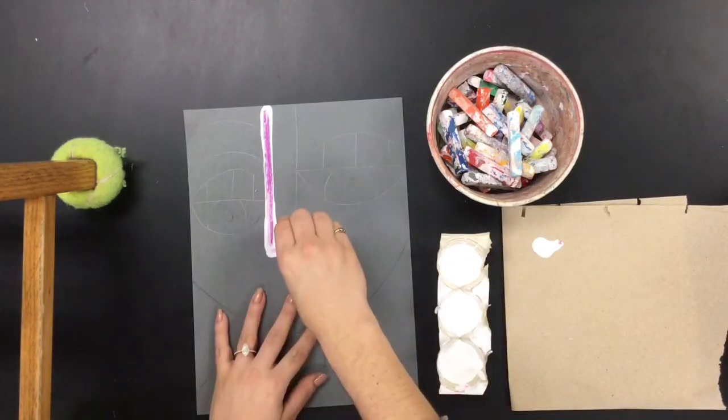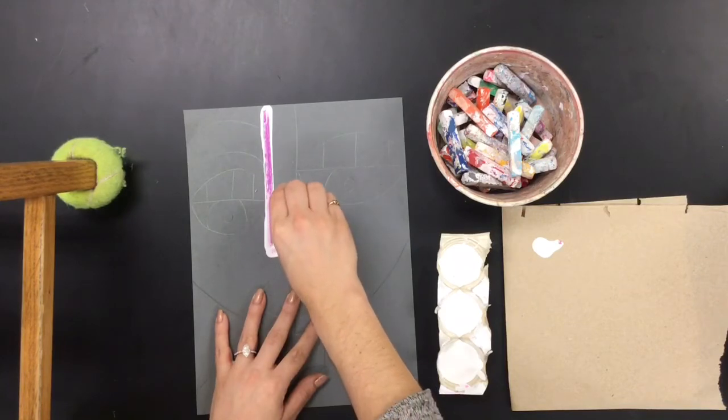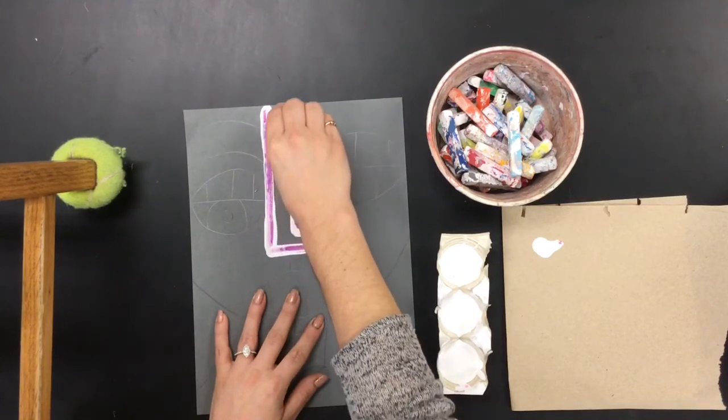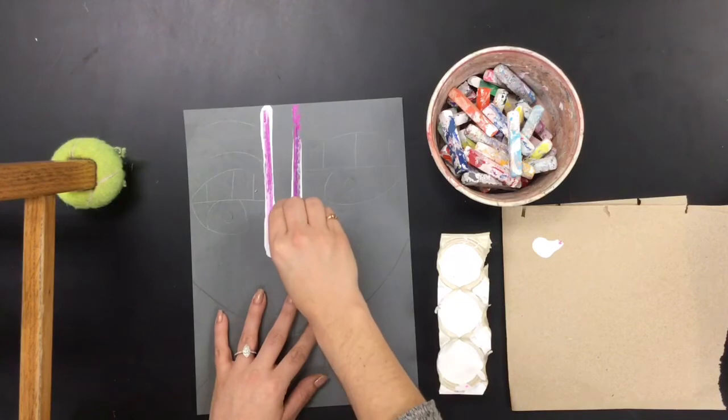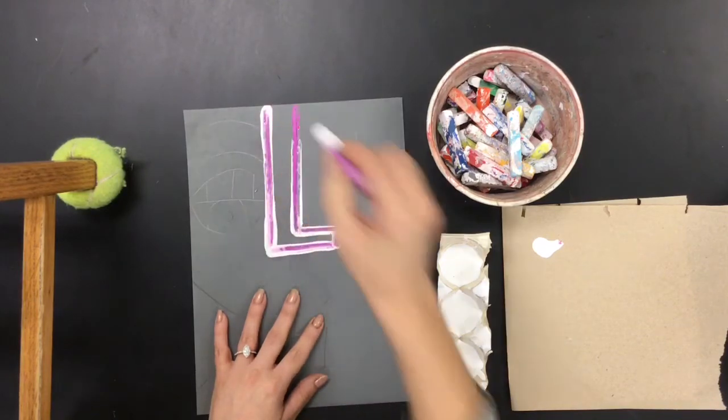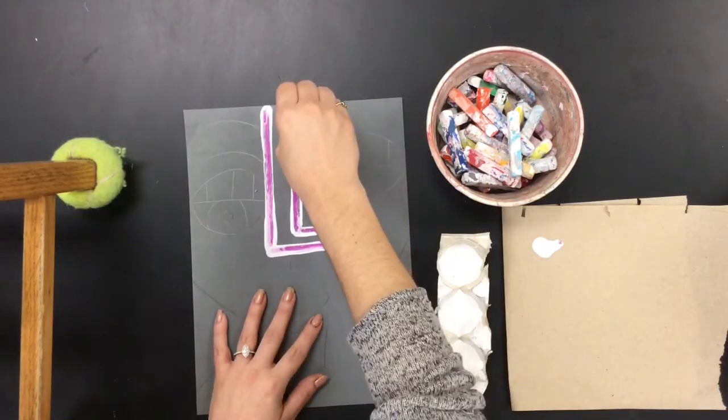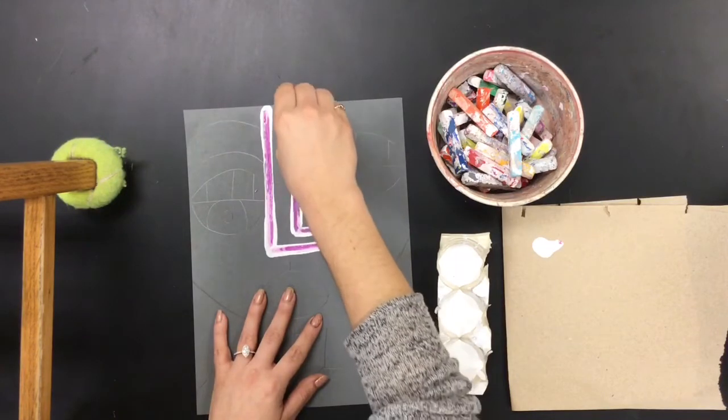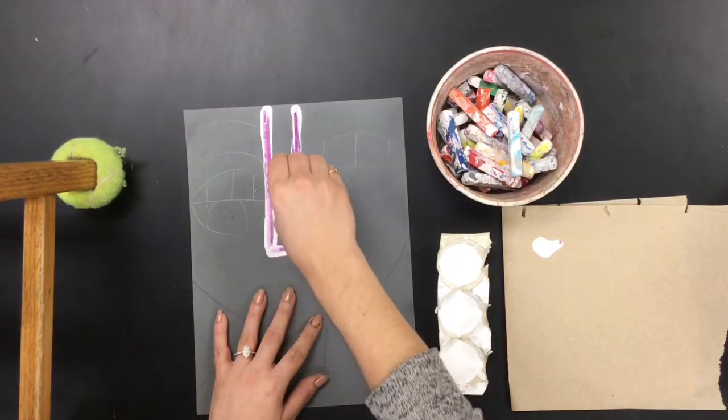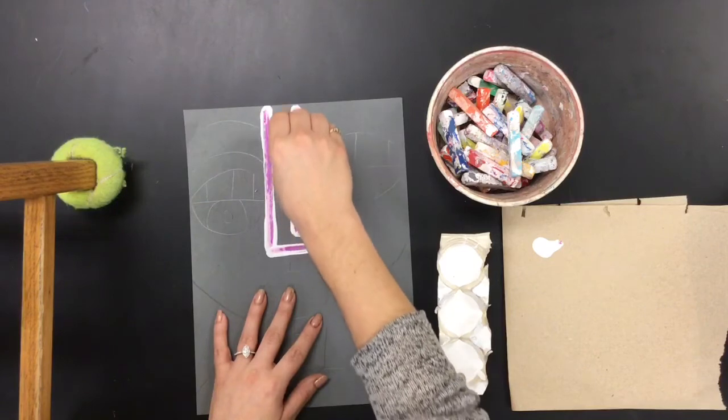So I'm going to take my chalk pastel and I'm just going to make sure I spread that paint out onto my line so that I do not have a big puddle of paint. Now I'm going to go back and make sure my line has a consistent even amount of paint and chalk.